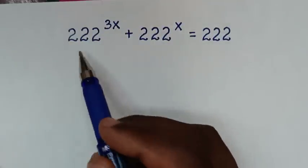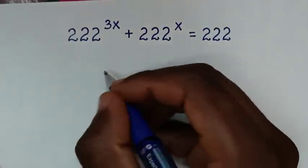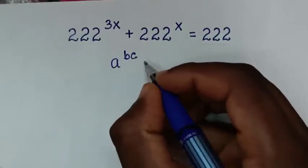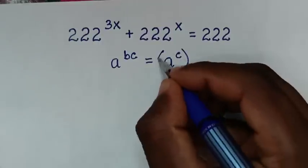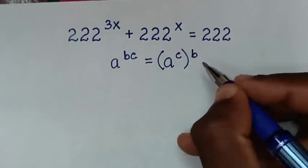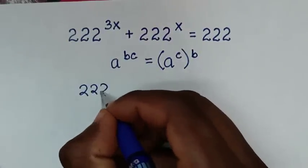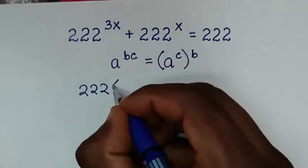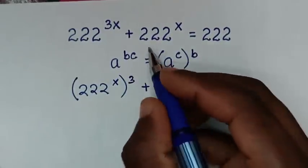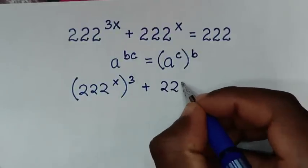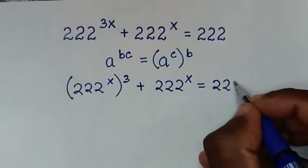Now, the exponent 222 power 3x is in the form of a^(bc), which is equal to a^c raised to the power of b. So we'll rewrite it as 222 power x inside the bracket, then power of 3 outside the bracket, then plus 222 power x is equal to 222.